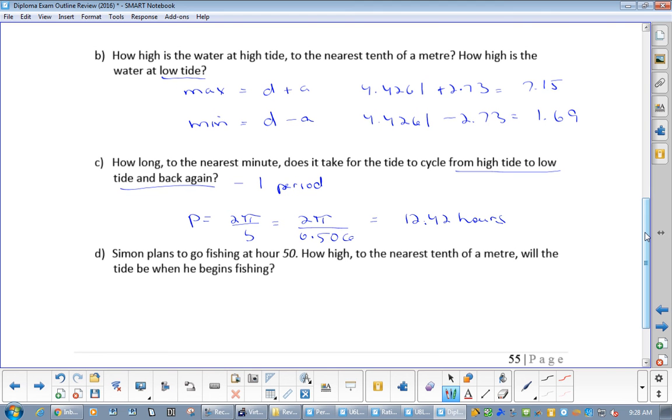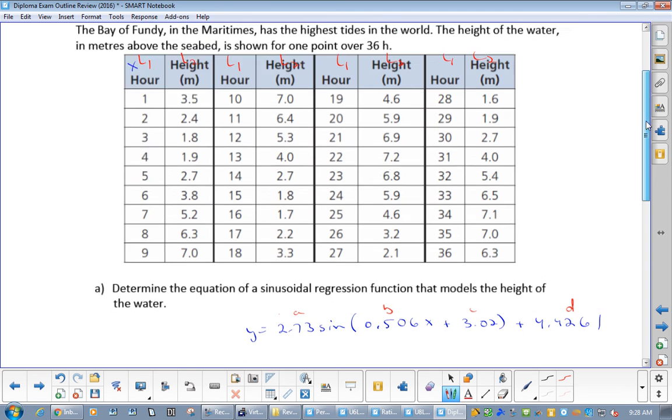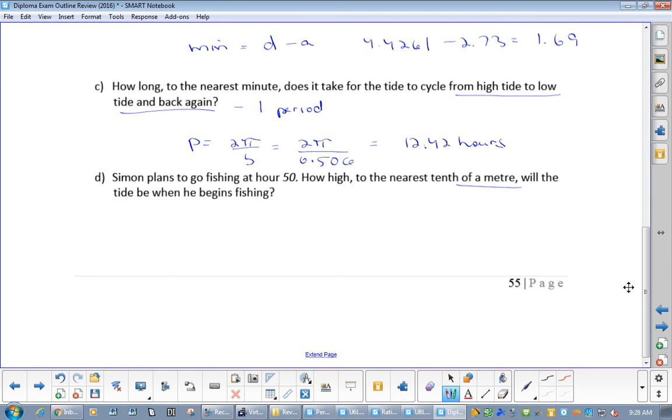Now, Simon plans to go fishing at hour 50. How high to the nearest minute, or sorry, nearest meter will the tide be when he begins fishing? Okay, so hour is our L1, right? So that's our X. L2 is our Y. So when we're looking for X, we're going to go trace. Remember, we always have to hit up, and then we're going to do 50.